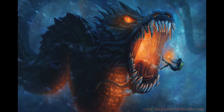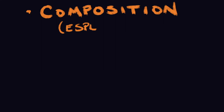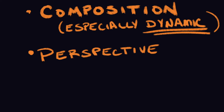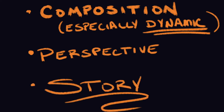Which subjects, you inquire? Well, so kind of you to ask. Composition, especially dynamic composition, but also focusing on the way that different types of composition can help set the mood for a painting. Perspective, especially the importance in this case of a secondary figure to show scale. And story. It's going to be a little bit longer than some of my other tutorials because I have a little bit more to talk about with this one.